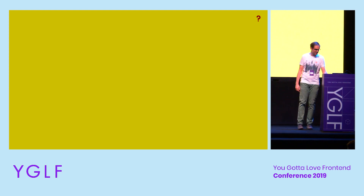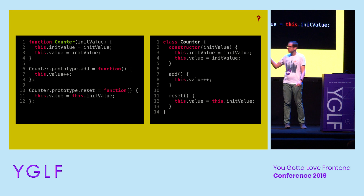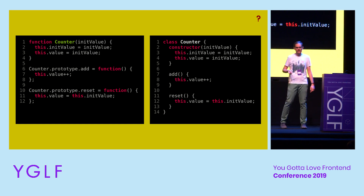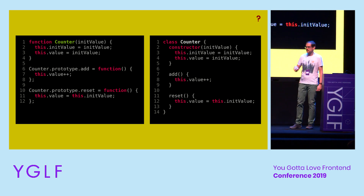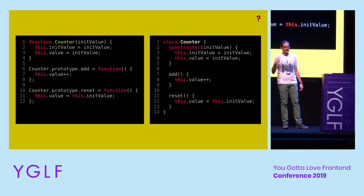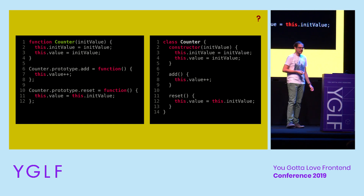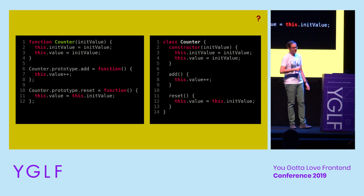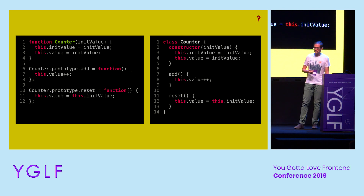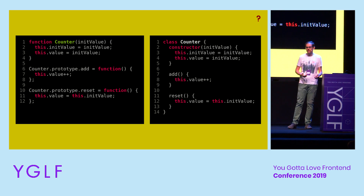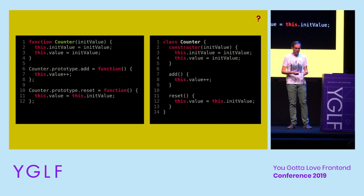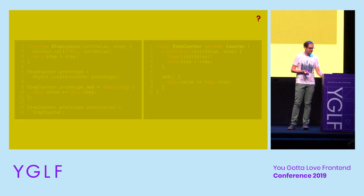Let's look at an example. Here's a simple counter written with prototypes on the left and classes on the right. We're going to use this example throughout the slides. It just gets an initial value, then has an add method to increment the counter and a reset method to reset it to the initial value. The class looks a little bit cleaner, but it's not such a dramatic difference.